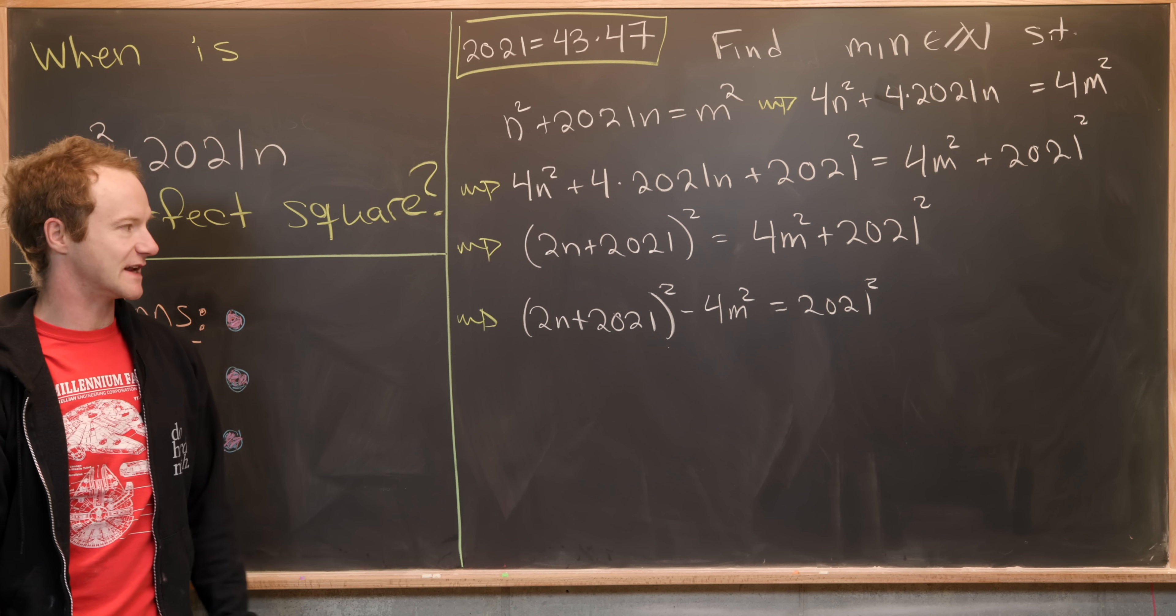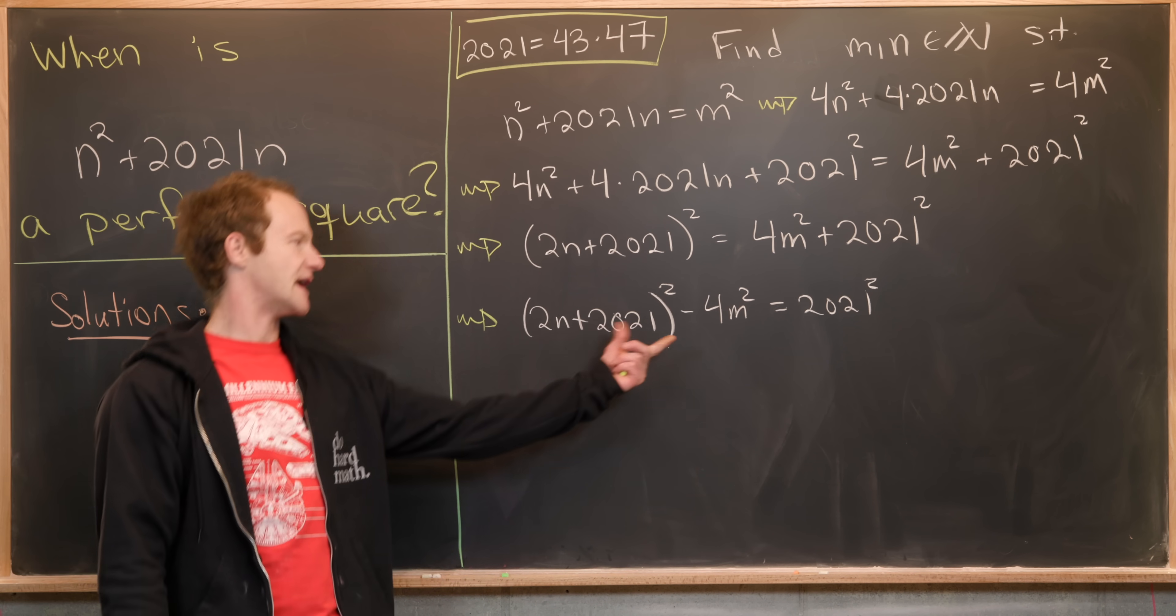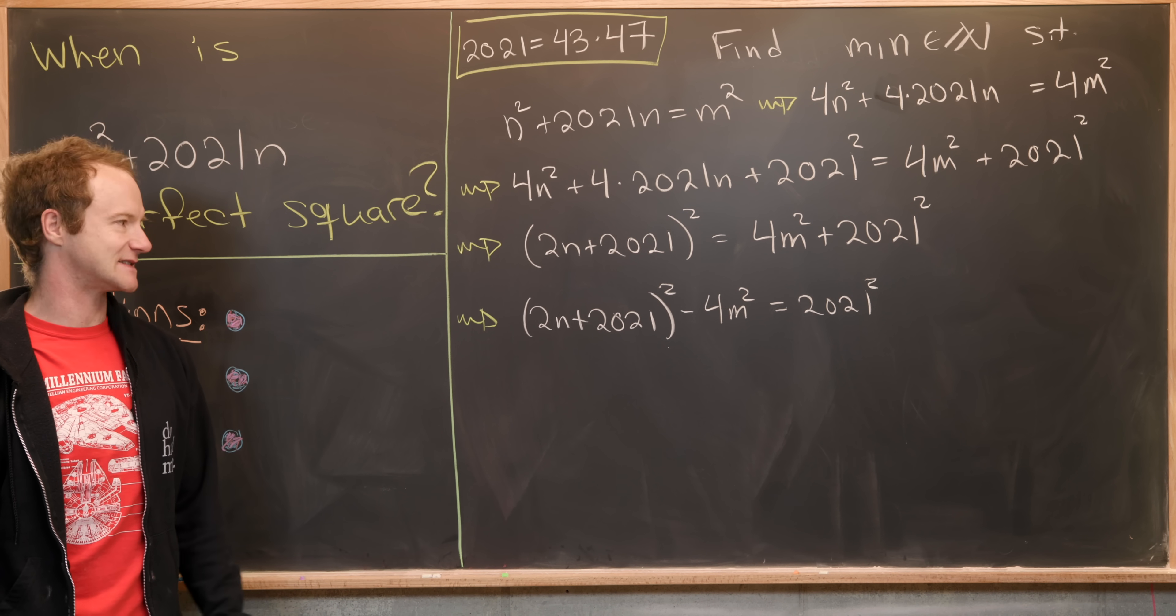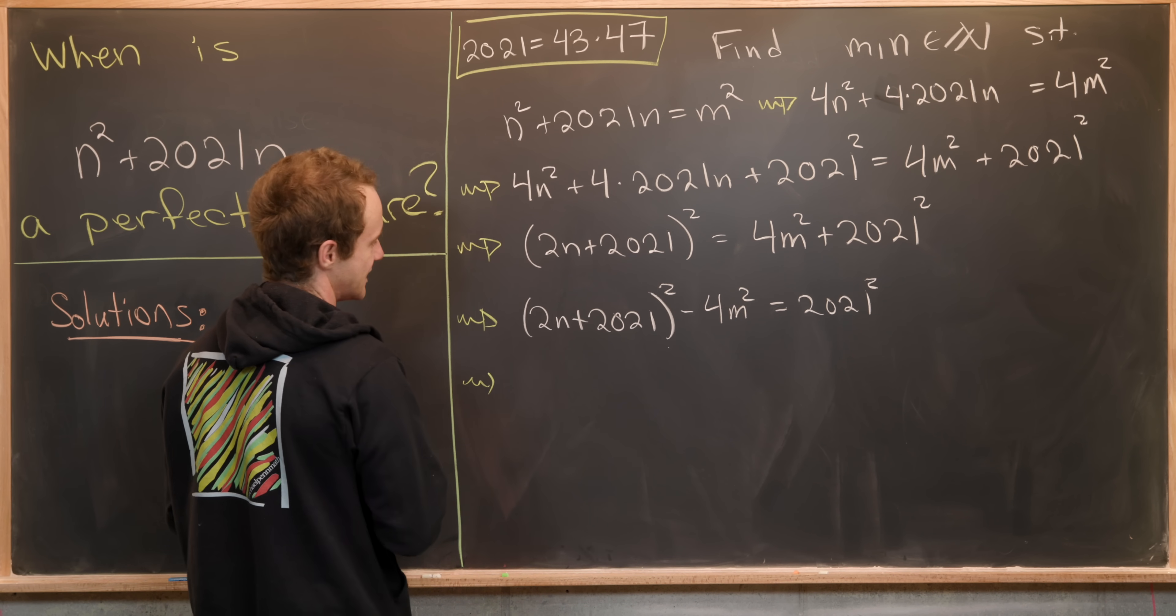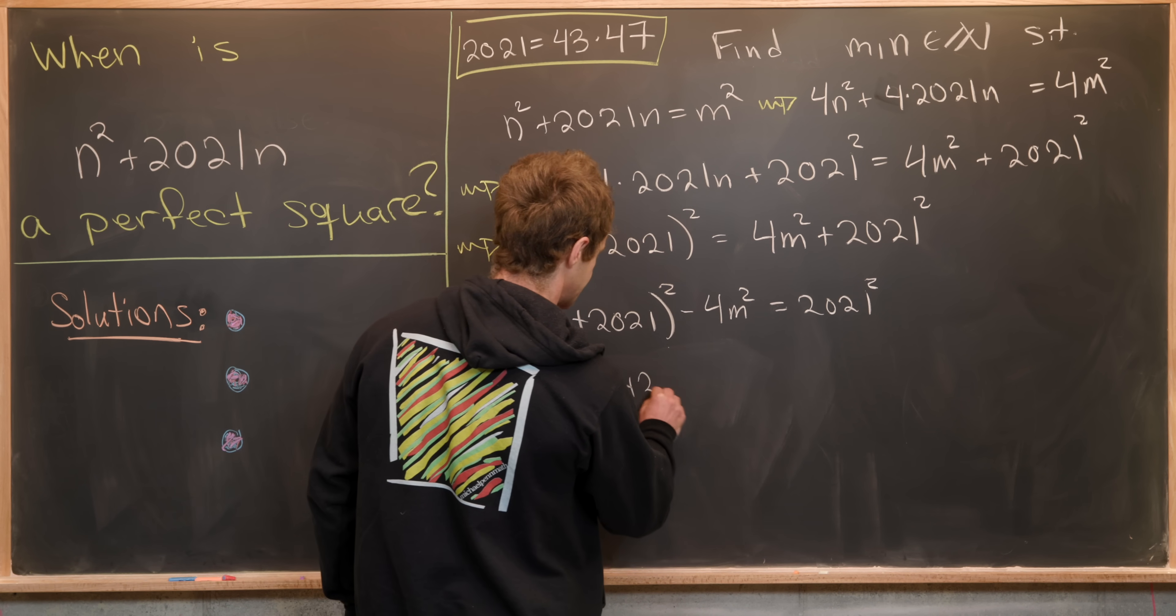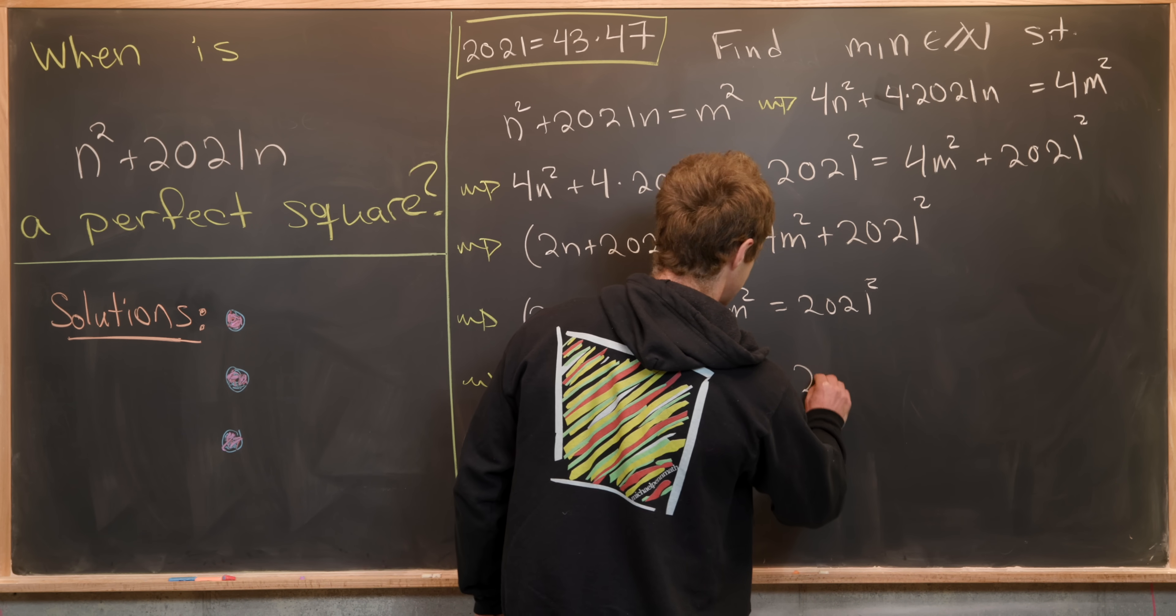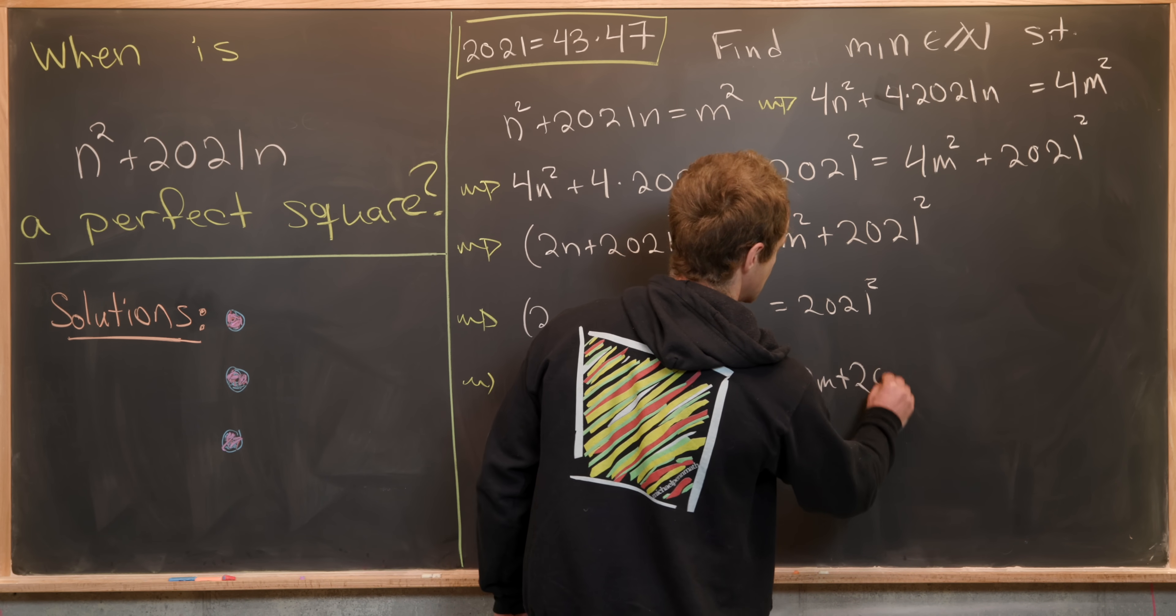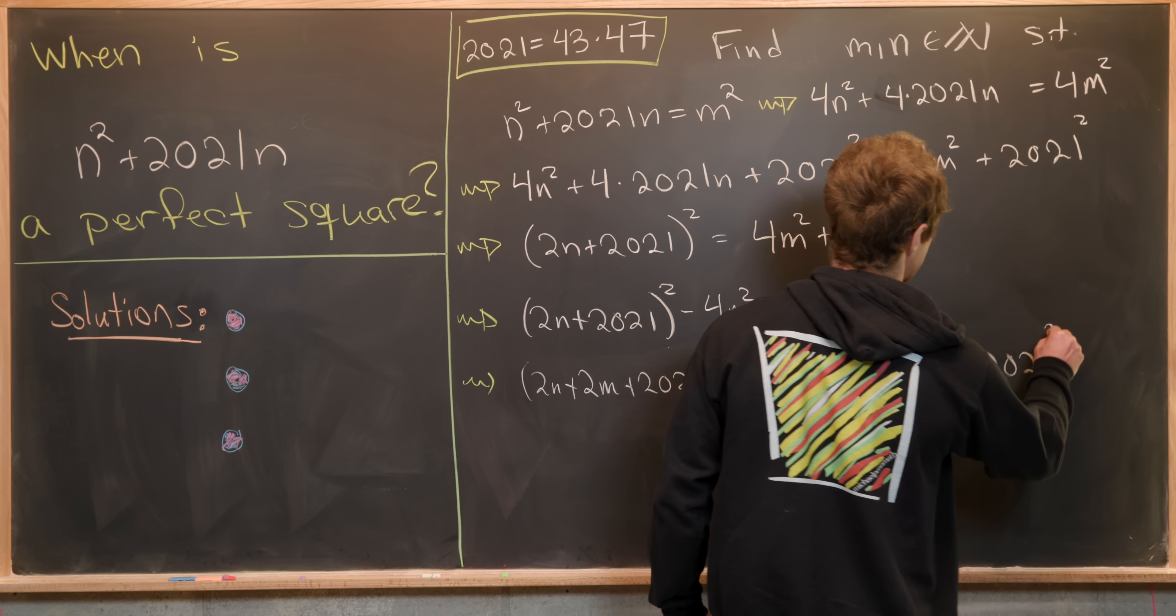That's going to give us (2n + 2021)² - 4m² = 2021². But check it out. We've got a difference of squares over here on the left hand side. That has a nice factorization. So let's maybe factor that.